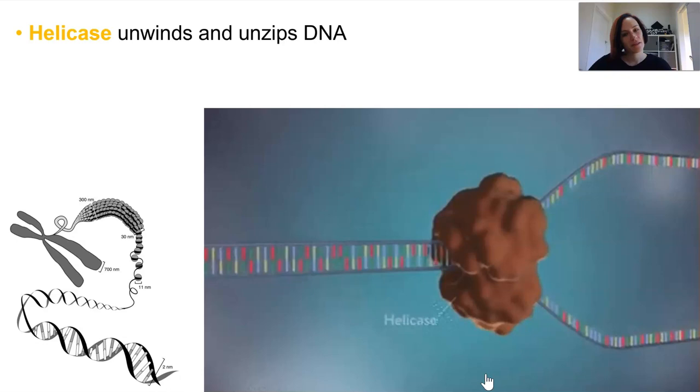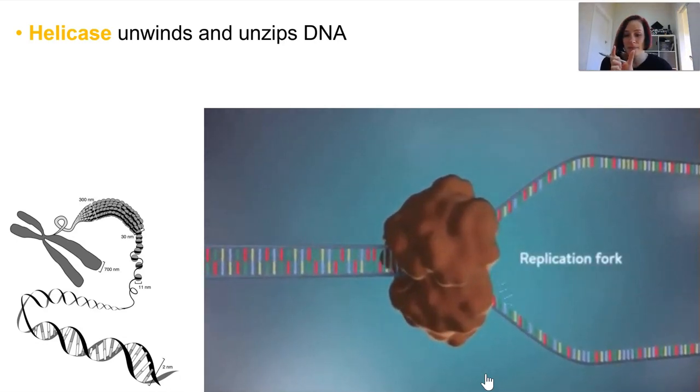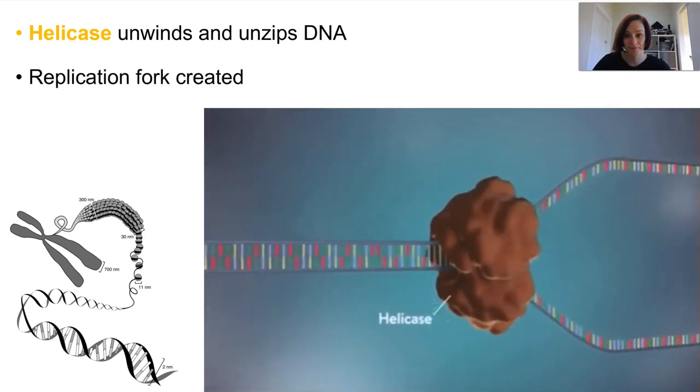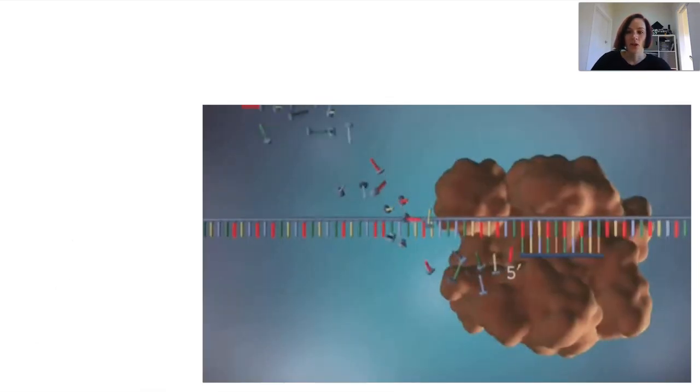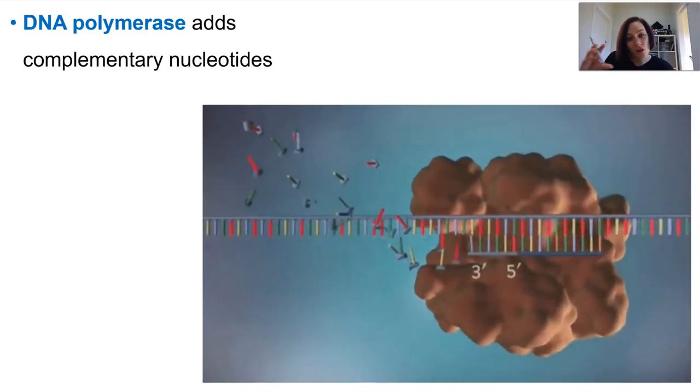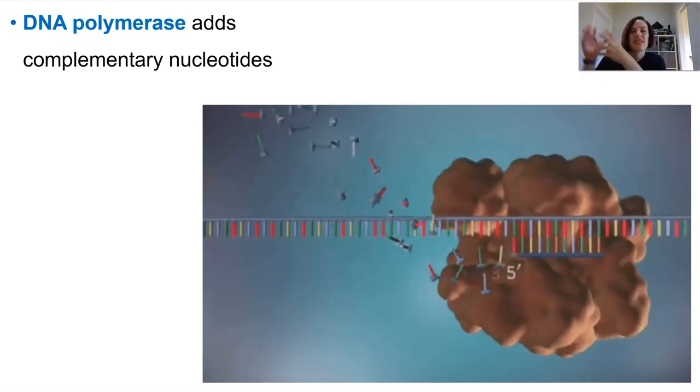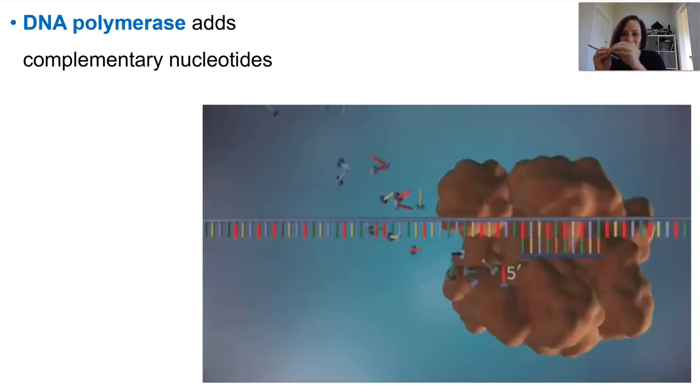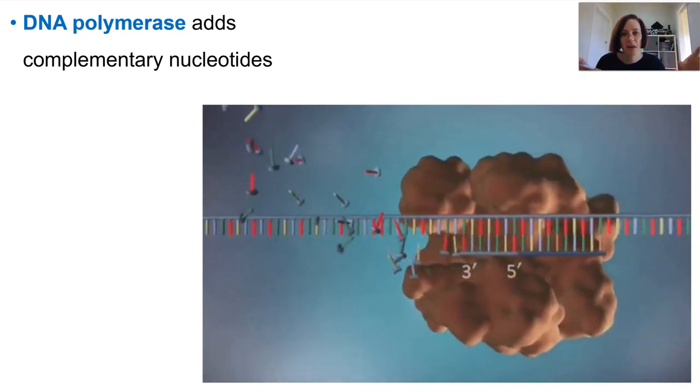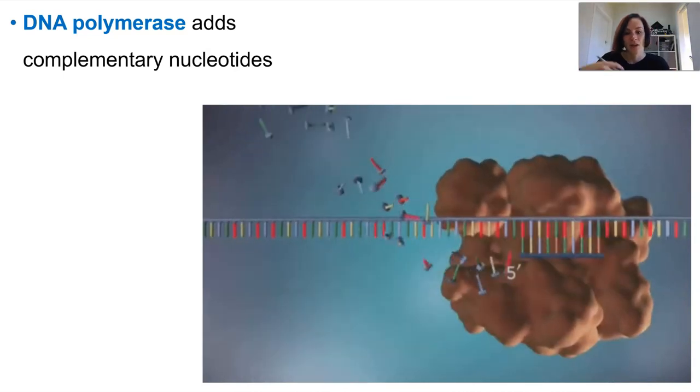Now, because of that really tightly wound packaging of the DNA, the replication fork is only opening up a very small section of the DNA at any given time. So as helicase moves the replication fork down the DNA molecule, another enzyme known as DNA polymerase follows along on one of the parent strands. So it freely pulls in free nucleotides to attach to the complementary bases, pairing them up in that normal way we would see A to T and G to C, based on that parent template strand.